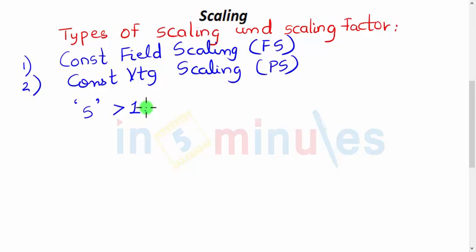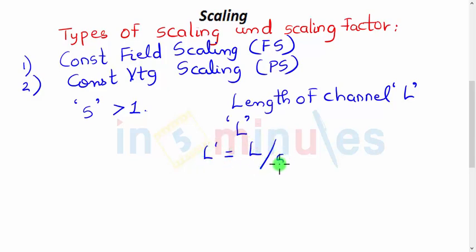Let's understand this with one simple example. Let's assume in a MOSFET the length of the channel is denoted by L. The initial length was L before scaling. After scaling, the length is divided by the scaling factor which is greater than 1. So the length of the channel is now reduced. That's what we meant by reducing the physical dimensions of the MOSFET.